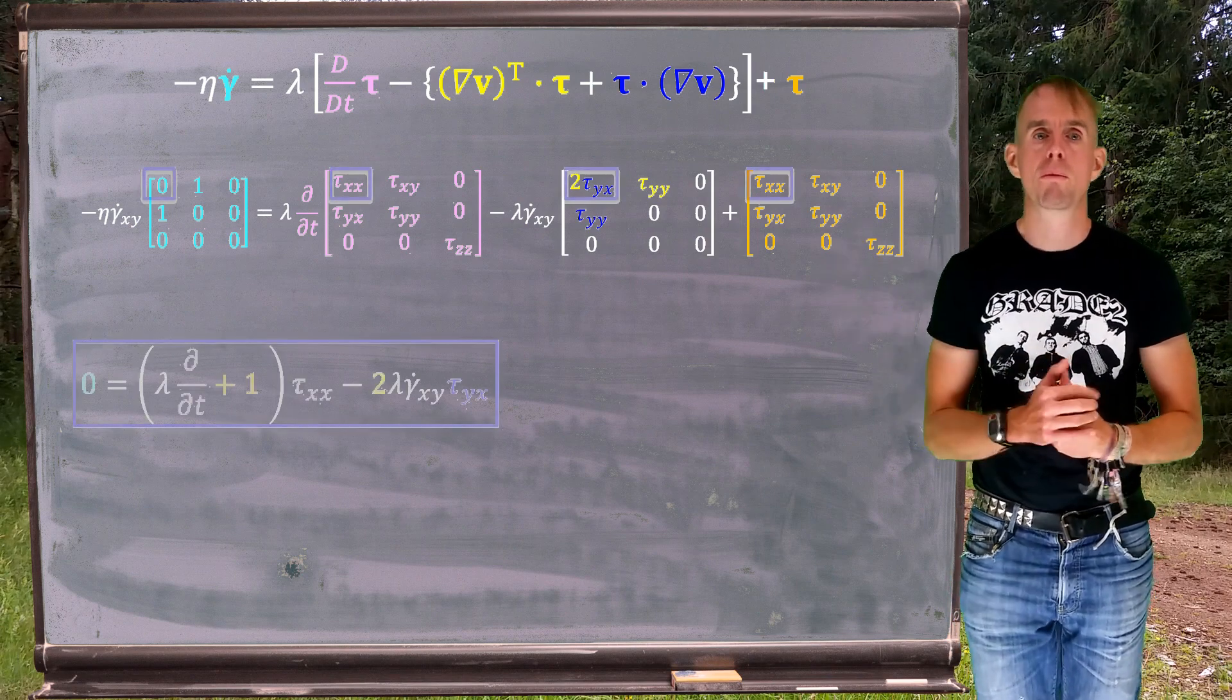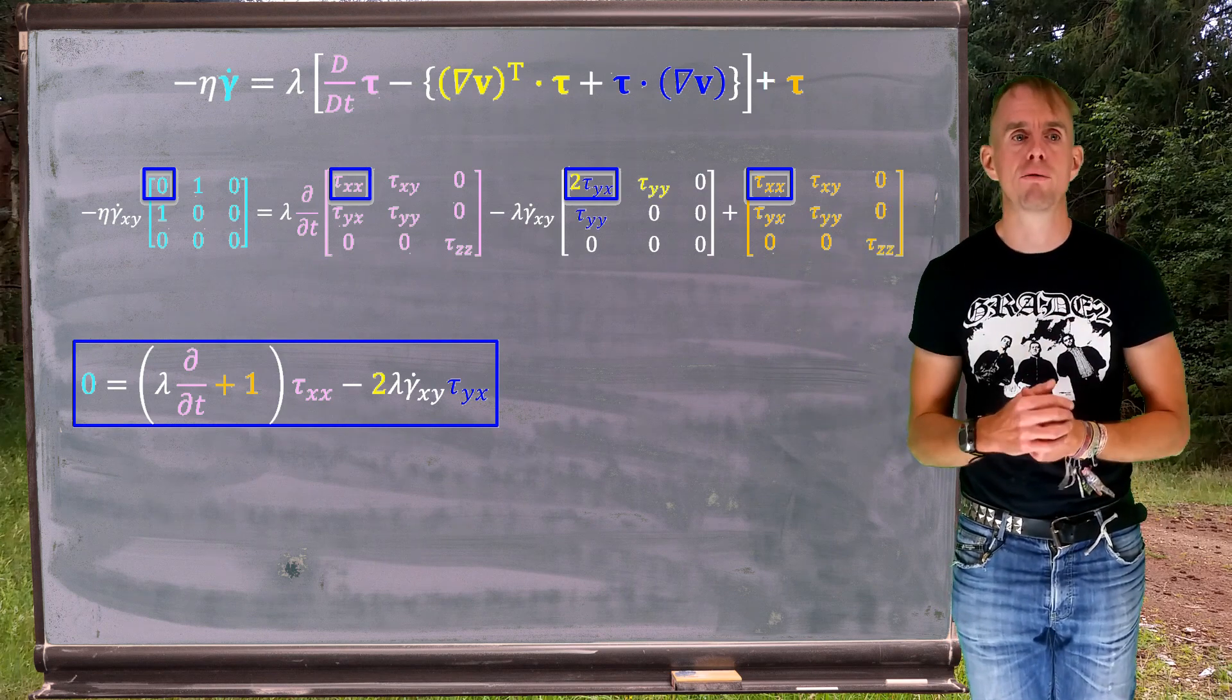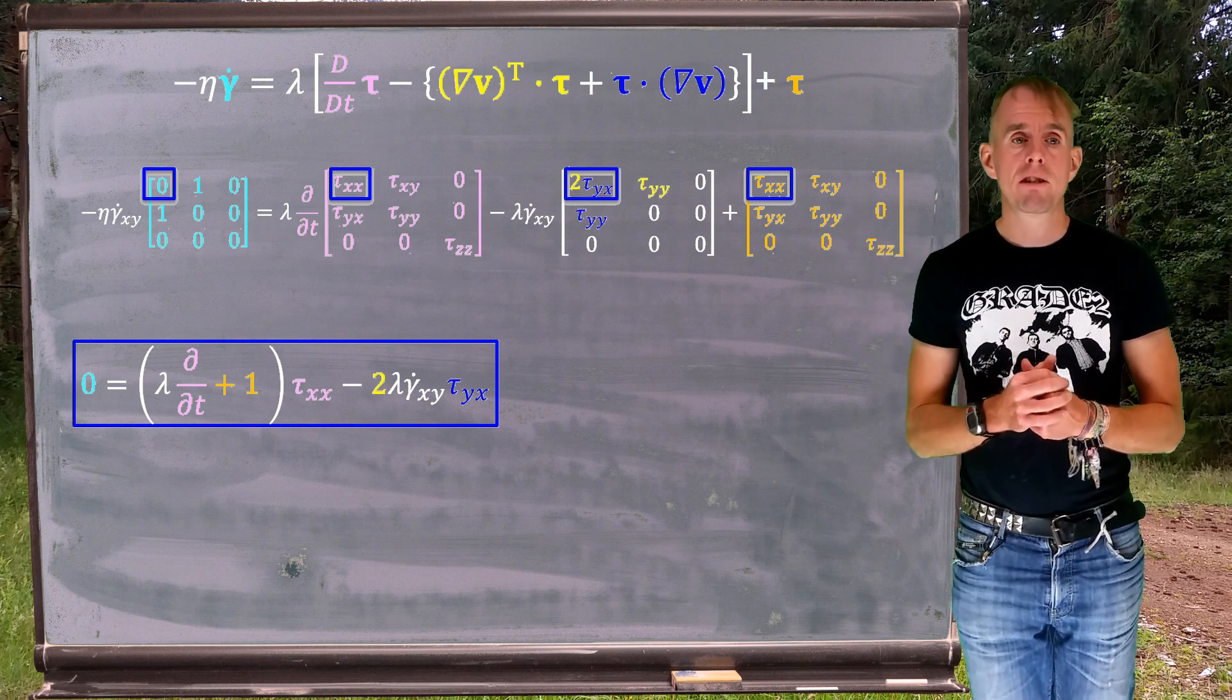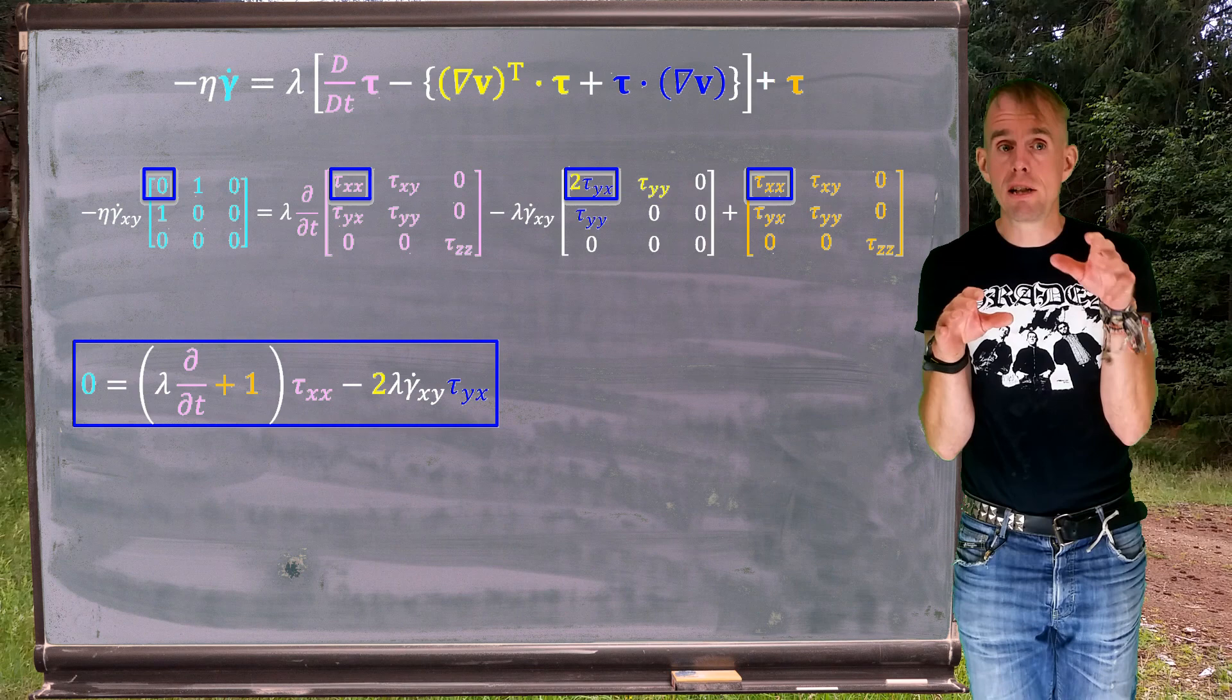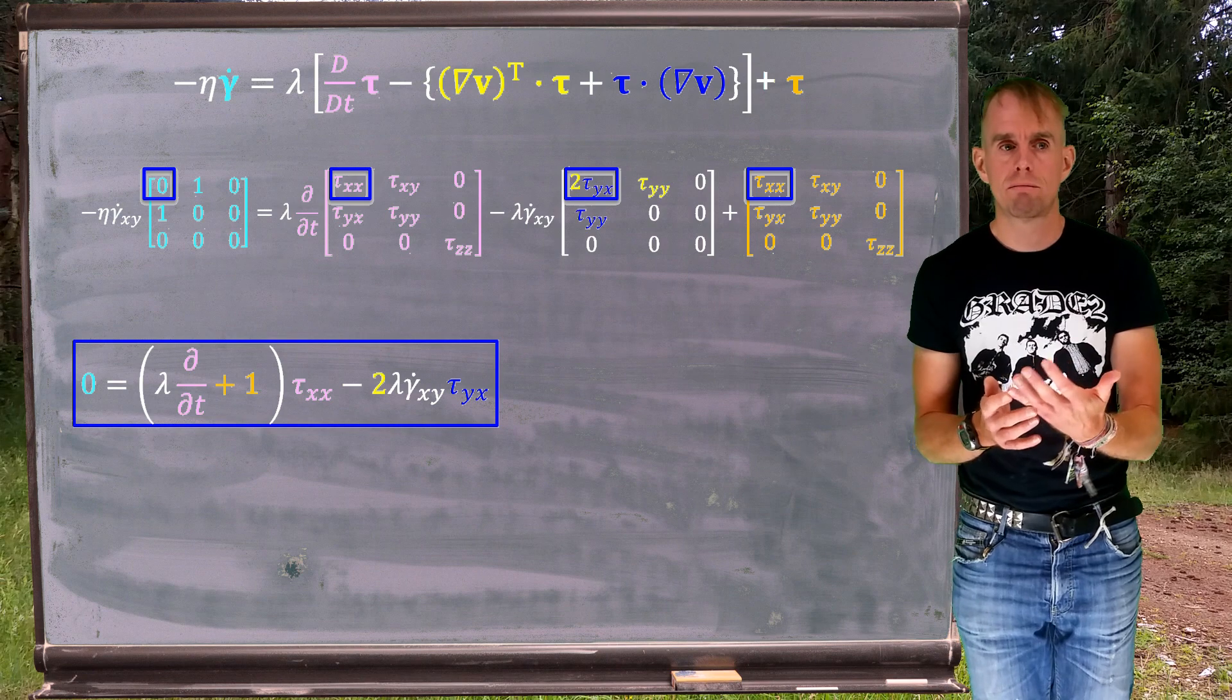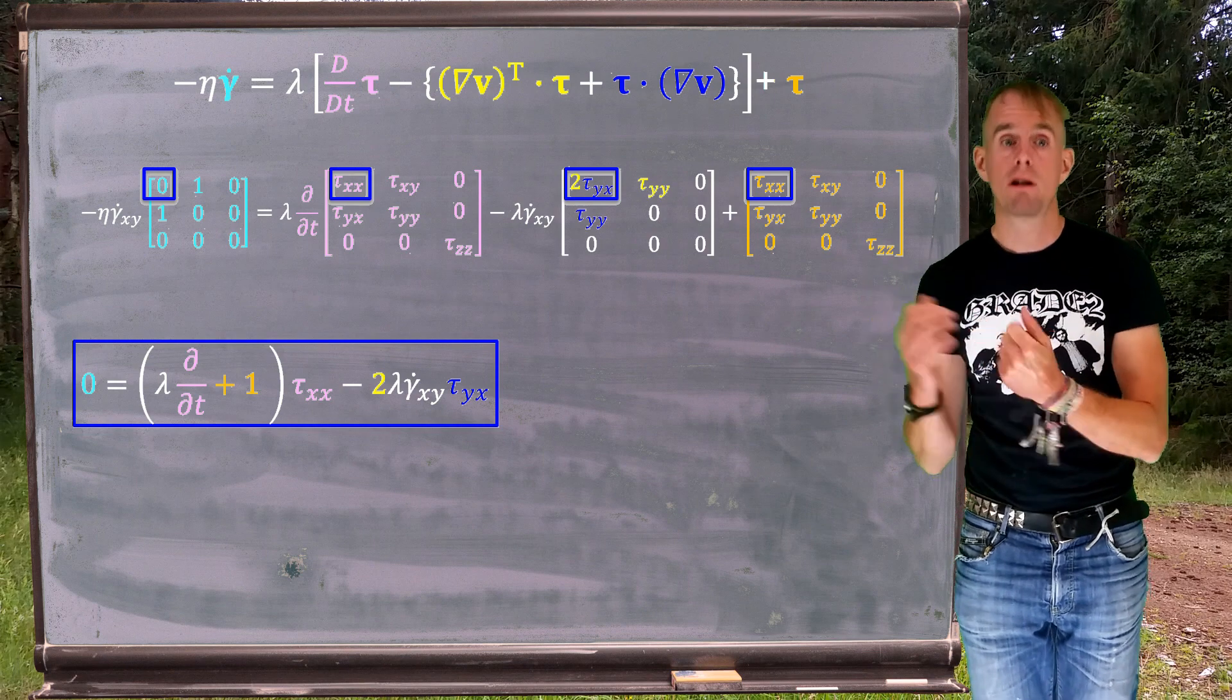Let's have a look at the 1,1 position. We can see on the left-hand side, the 1,1 position of gamma dot is zero. On the right-hand side, that tensor in pink, which is the total derivative of the stress tensor, we have a partial d by partial dt of tau xx. So that's non-zero, that's good. In the second tensor on the right-hand side, which is the sum of the grad v transpose dot tau plus tau dot grad v, that symmetric entity, we can see the 1,1 position has 2 tau yx. And in the final tensor, tau, we can see the 1,1 position is just tau xx. And so we end up with the equation that I've highlighted there in blue with a big blue box. On the left-hand side, we have that zero, and on the right-hand side, we have a sum of terms that drop out of those tensors.